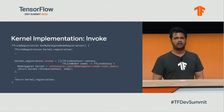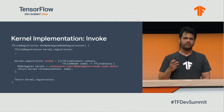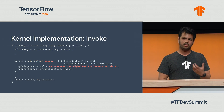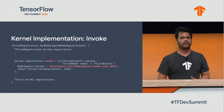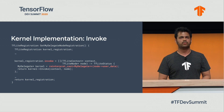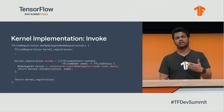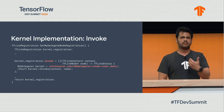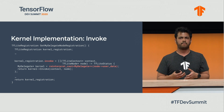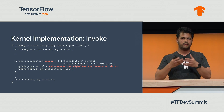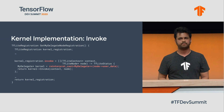Then at inference time, we run this method called invoke. In invoke, the kernel gets back the object it returned during init, and it is free to do whatever it wants to as long as the implementation is semantically similar to what the delegated partition would have done.